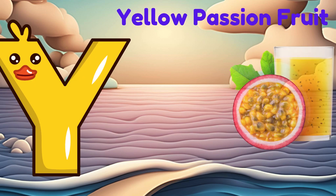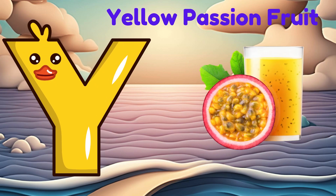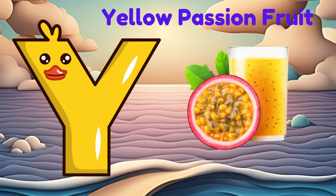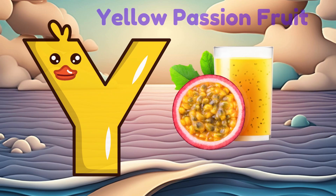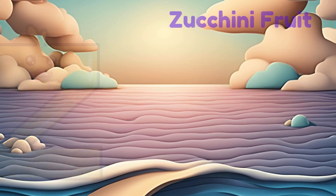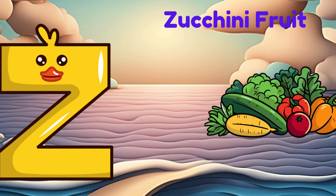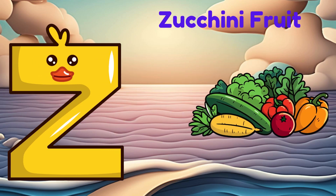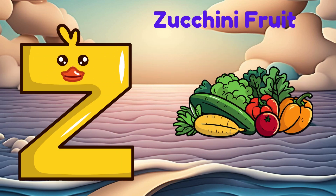Y is for yellow passion fruit. Ya, ya, yellow passion fruit. Z is for zucchini fruit. Z, z, zucchini fruit.